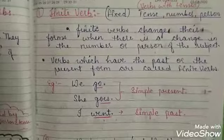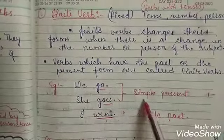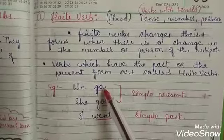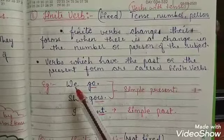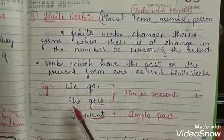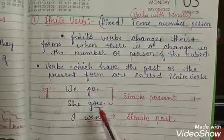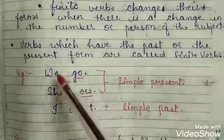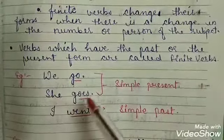For example, we have 'we go' — this is simple present tense. And 'she goes' — this is also simple present tense. Here we have a plural subject; according to the rule of simple present tense, with a plural subject we use the base form of the verb. With the singular subject, we use V1 plus S or ES. So we have seen that the verb changes its form according to the number of the person: plural subject gives 'go' and singular subject gives 'goes'.